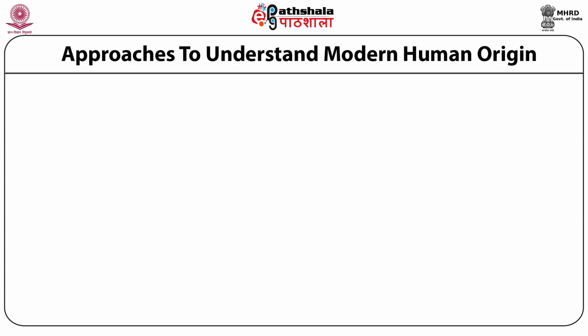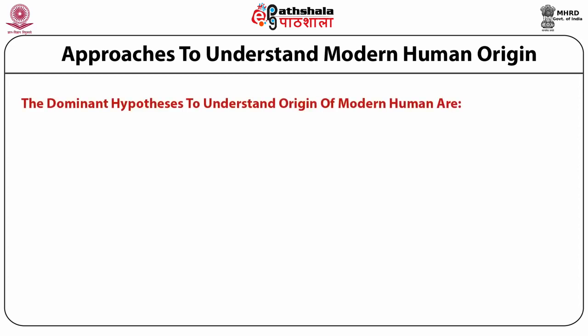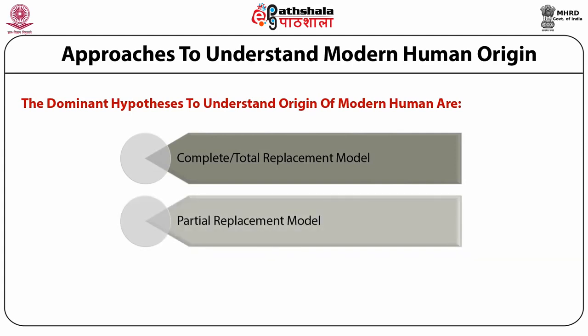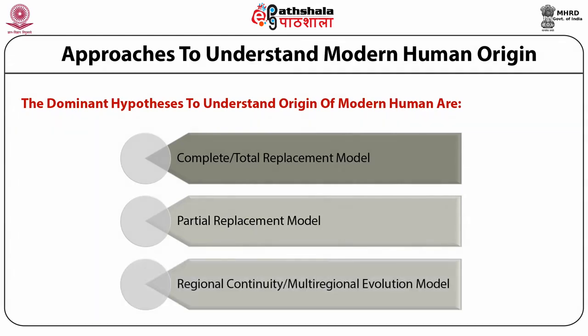The dominant hypotheses to understand the origin of modern humans are: first, the complete or total replacement model; second, the partial replacement model; and third, the regional continuity model, also called the multi-regional evolution model. The complete replacement and regional continuity models represent opposite views. The partial replacement model is a compromise, incorporating aspects of both.